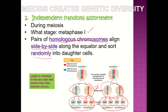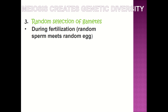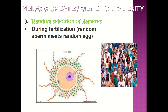Every time sperm or eggs are produced, independent assortment creates more variation in those sex cells. Third is the random selection of gametes: when fertilization happens a random egg is released and a random sperm fertilizes it, creating even more variation in offspring. That's why even people with multiple children most likely don't look exactly the same. At the end of your notes there are boxes with pictures to summarize — identify whether each shows crossing over, independent assortment, or random selection of gametes.